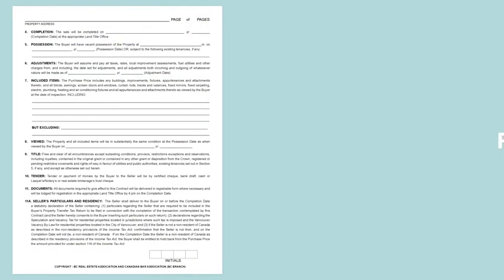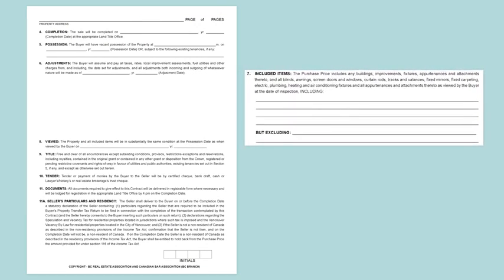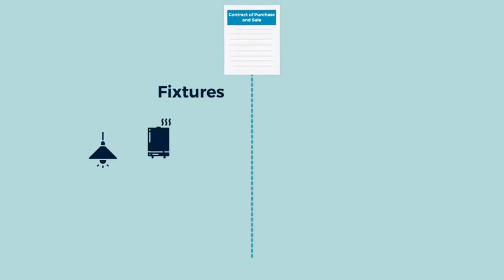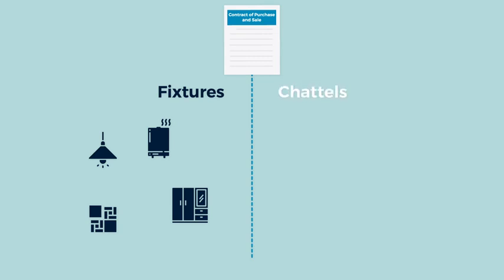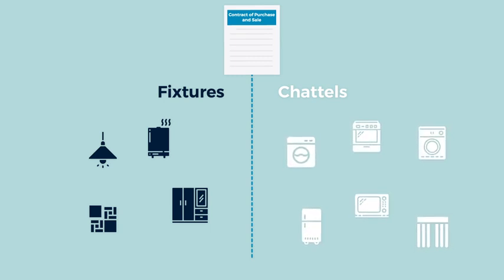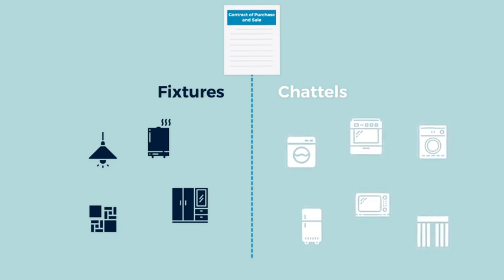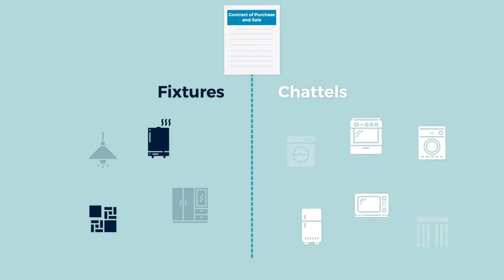Fixtures and Chattels: This section lists the items to be included and excluded as part of the purchase and sale. Fixtures are generally objects or improvements that are attached or physically affixed to the property, or cannot be removed easily without causing damage — examples include hot water tanks, built-in cabinets, lights, and flooring. Fixtures are included in the purchase and sale unless specifically excluded. Chattels are movable items of personal property and must specifically be listed in the offer if they are to be part of the sale — examples include fridges, stoves, microwaves, washers, dryers, or window coverings. If the buyer or seller wants particular items included or excluded, it is important they specifically list them in the contract.